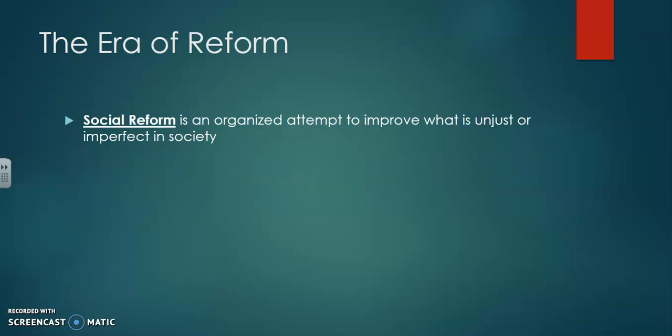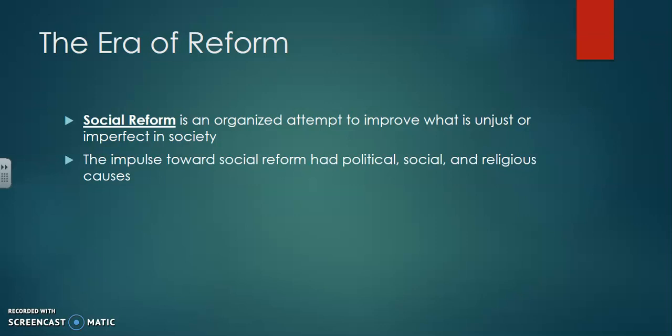Social reform is an organized attempt to improve what is unjust or imperfect in society. If you look around, you will be able to see many things in society that just aren't right and should be fixed, and so a lot of social reform will take place. The impulse towards social reform will have both political, social, and religious causes, and we'll talk about all three of those causes today.